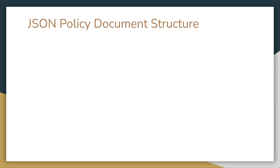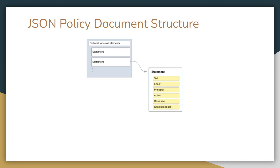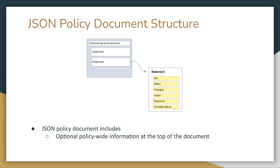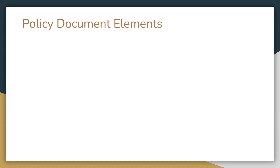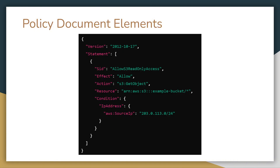Let's take a look at the JSON policy document structure. Since a policy is an object, it is represented as a JSON object in AWS. This JSON object includes optional policy-wide information at the top and one or more individual statements. This example policy grants read-only access to an S3 bucket but only from a specific IP range. At the top you can see a version — currently 2012-10-17 — which is the most recent version and specifies the version of the policy language.